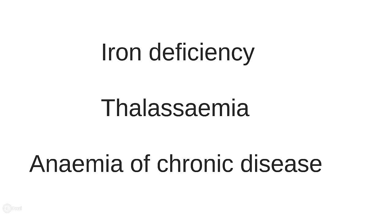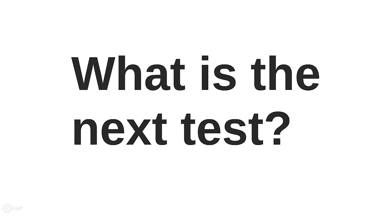Iron deficiency anaemia is the most common cause. Thalassaemia minor causes microcytic anaemia but this is unlikely. Anaemia of chronic disease can cause a normocytic or microcytic anaemia and should be considered; however, it's unlikely in his case as his only past medical history is of hypertension. So what is the next test to request?